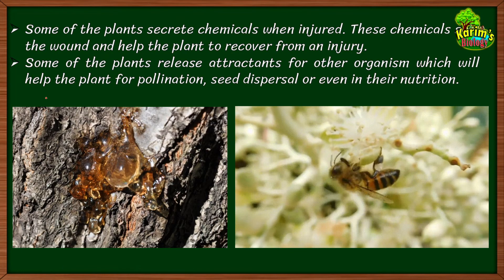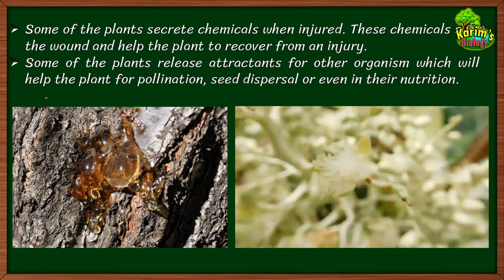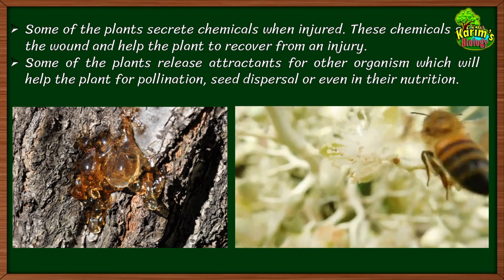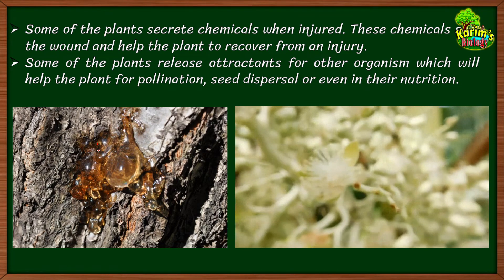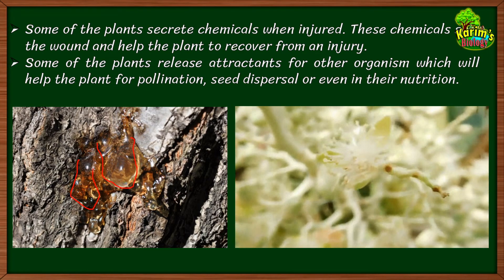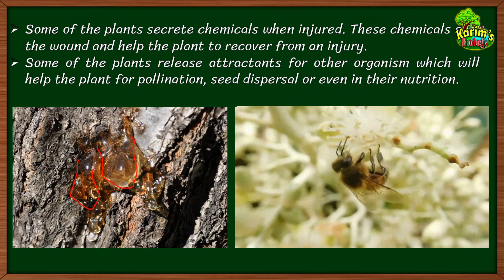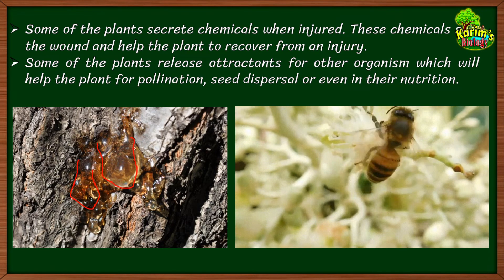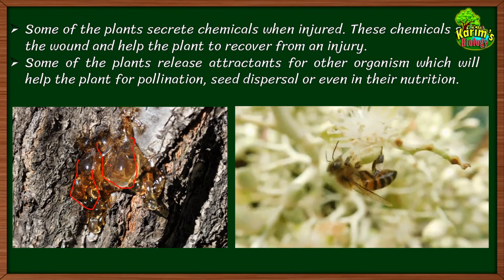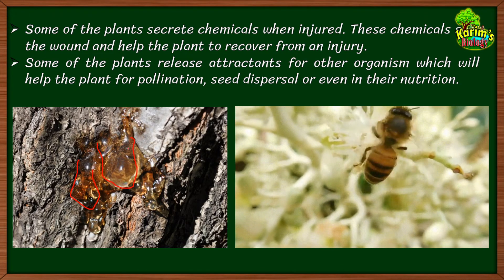Some plants secrete chemicals when injured. These chemicals seal the wound and help the plant recover from injury. You can see a tree here with an injury on its stem, and a sticky chemical being secreted from it. Plants convert waste material into gummy substances — if the wound remains open, it becomes an entry site for parasites, so the plant seals it with this gummy secretion, allowing the wound to heal quickly and safely.